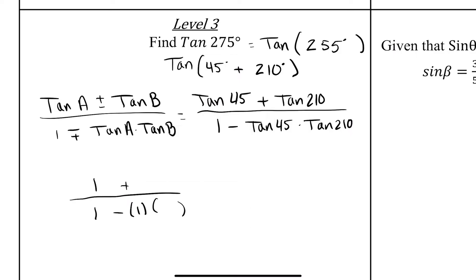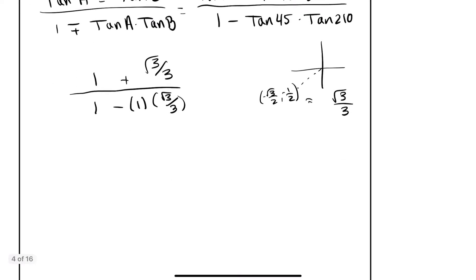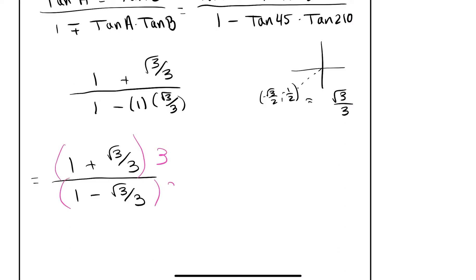Now we need the tangent of 210. At 210 degrees, the point is (−√3/2, −1/2), so tangent = y/x = (−1/2)/(−√3/2) = √3/3. So both tangent 210 values are positive √3/3. On top: 1 plus √3/3. On the bottom: 1 minus 1 times √3/3, which gives 1 minus √3/3. To eliminate the fractions, I multiply the top and bottom by 3. Three times 1 is 3, and 3 times √3/3 — the threes cancel — leaving just √3. So the top becomes 3 plus √3 and the bottom becomes 3 minus √3.